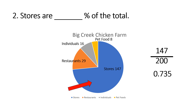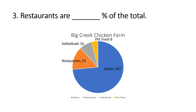We always move the decimal over twice — one, two — and now we have 73.5%, so 73.5% are the store clients. Restaurants are blank percent of the total, so we will take restaurants, which is 29 clients, divided by the total of 200 clients.